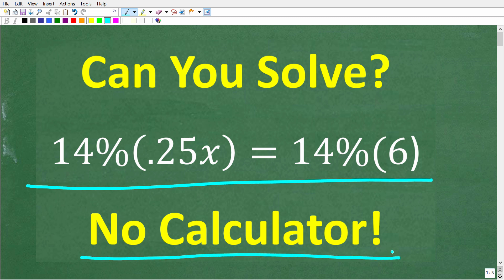And what we have here is a simple equation. So we have 14% of 0.25x is equal to 14% of 6, and we're trying to solve this equation for x. Now, if you think you know the answer, go ahead and put that into the comment section.